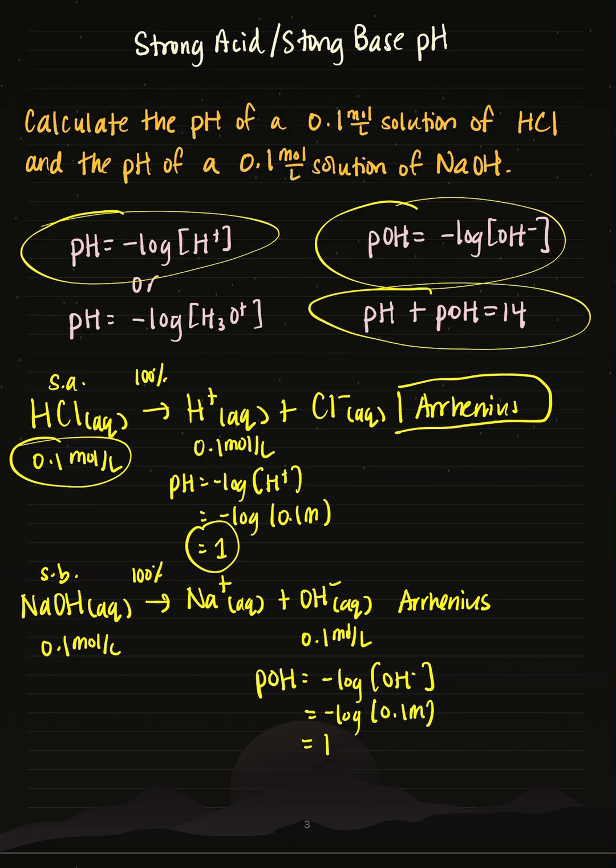So to get the pH, I'm going to use this expression. I know that the pH will equal 14 minus pOH. And so if I actually just rearrange, I'll get a pH of the base of 13.